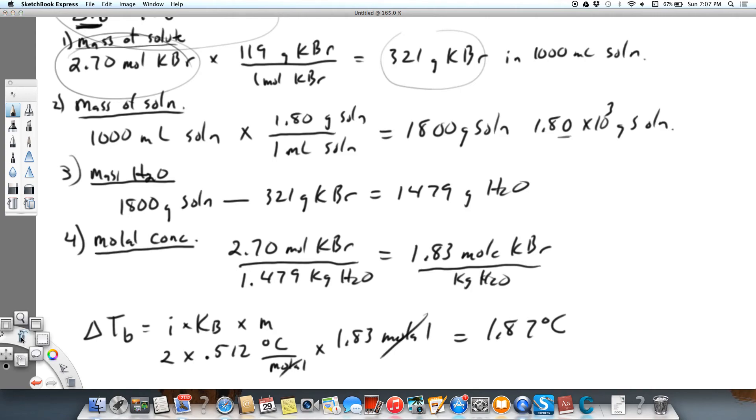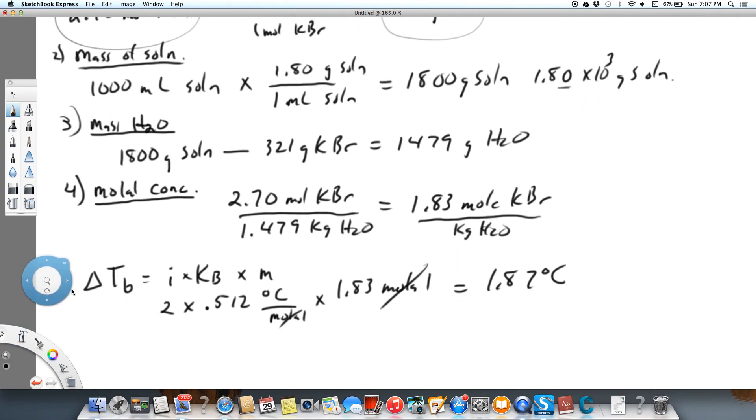And what I end up with is 1.87 degrees Celsius. That is going to be the increase. When we're dealing with boiling, this number is always going to be added. So the new boiling point, we'll call that the normal because that's at one atmosphere, is going to be 100 degrees Celsius. That's where water normally boils, plus this added factor due to the KBr.